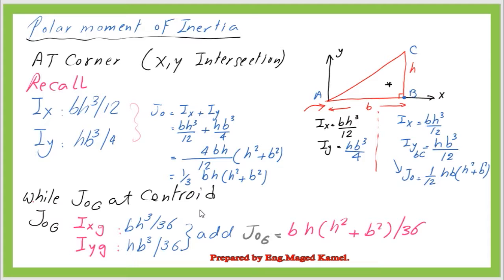To estimate the polar moment of inertia at the CG, we add the two centroidal values: IX_CG = BH³/36 and IY_CG = HB³/36. Adding them together, the polar moment of inertia at the CG equals BH(H² + B²)/36.